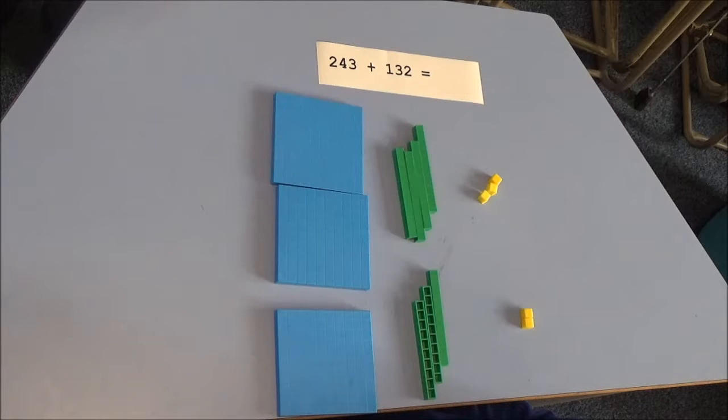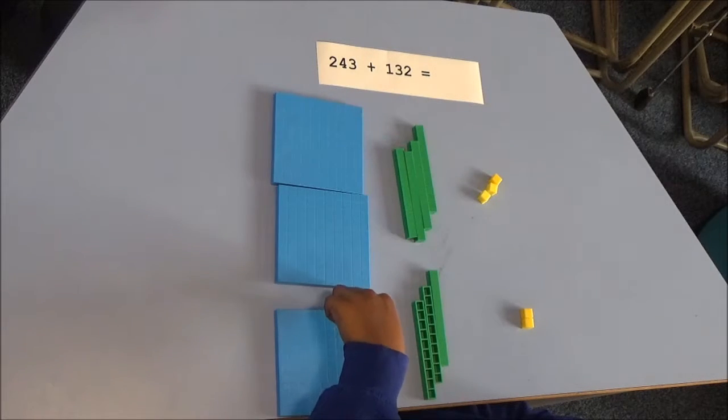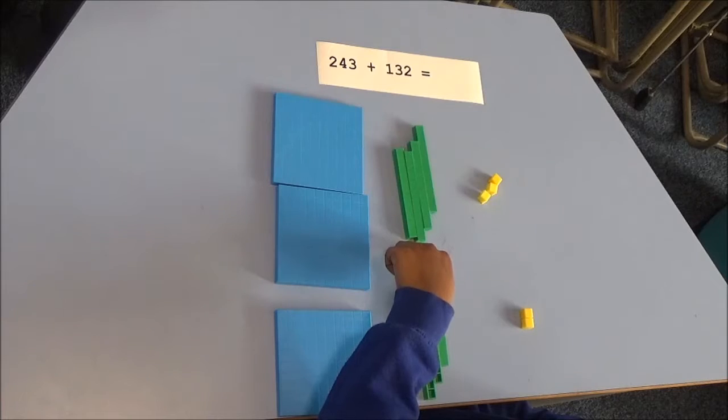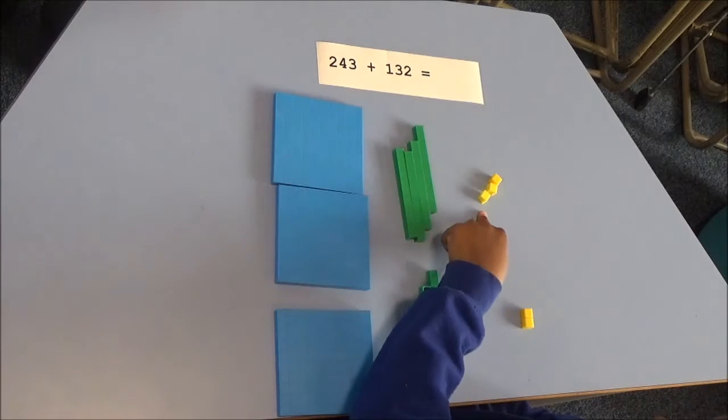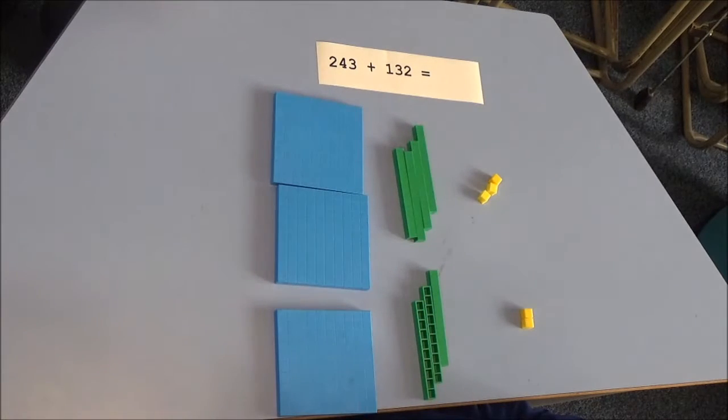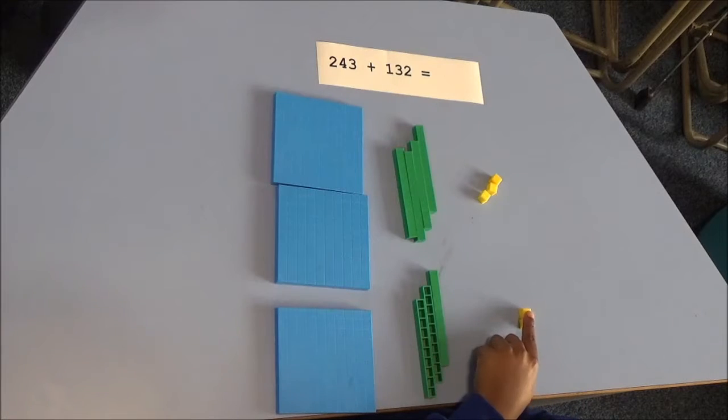For 243 there are 200, 4 tens and 3 ones. For 132 there is 100, 3 tens and 2 ones.